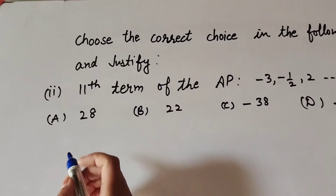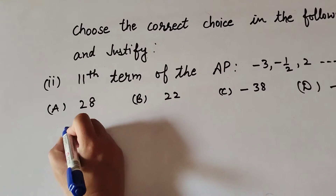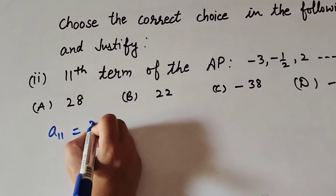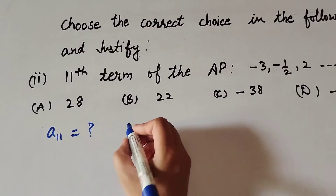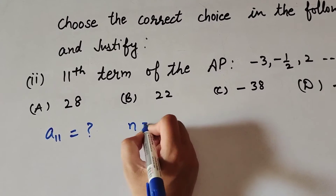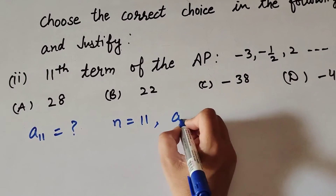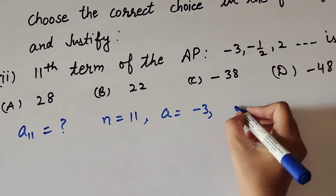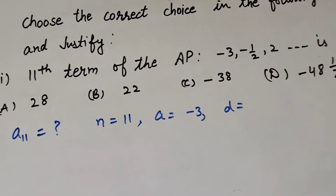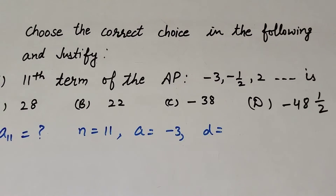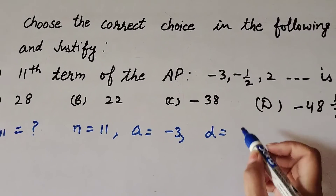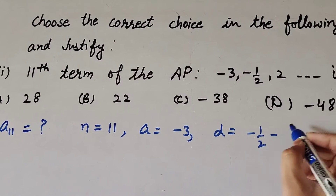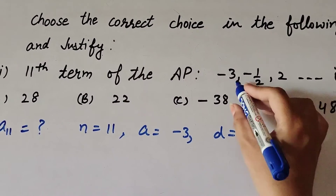We need to find the 11th term of the AP, so a₁₁ is what we have to find. Here n is equal to 11, and the first term a is equal to minus 3. The common difference d equals the second term minus the first term: −1/2 minus (−3).